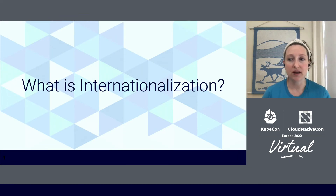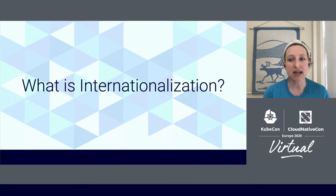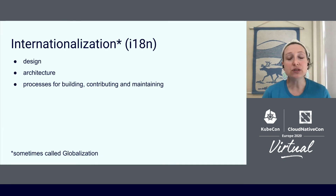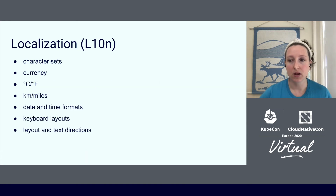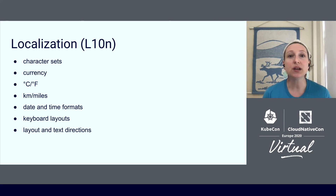So first, some terminology. Internationalization is the process of architecting your application so it can be quickly and easily adapted to various languages and regions around the world. It is sometimes called globalization. When we use the word internationalization, we are typically referring to the overall process and design portion of making your app inclusive. The term localization typically refers to the more specific translations, words, numbers and formatting that you would include for each language or locale.